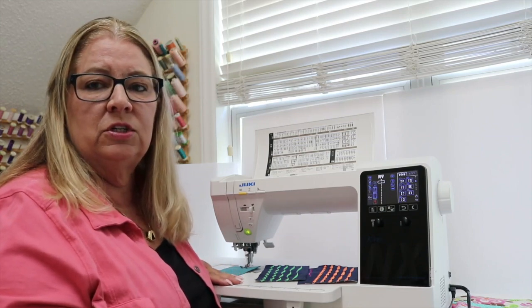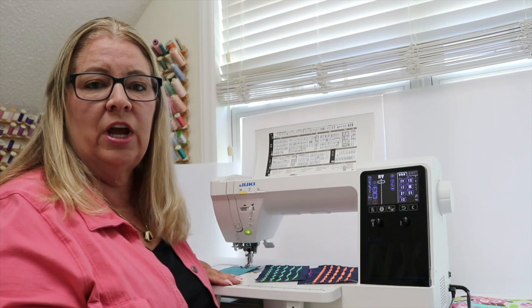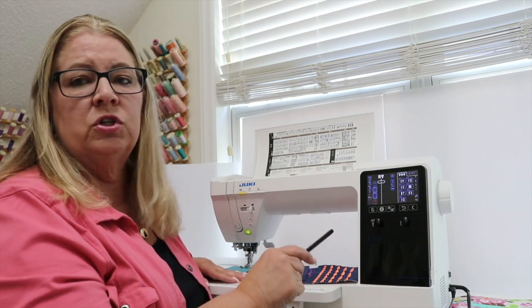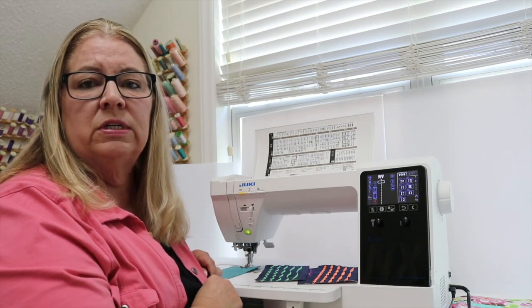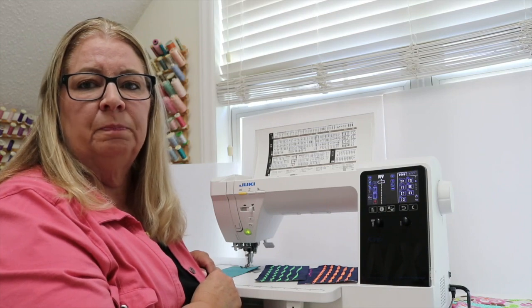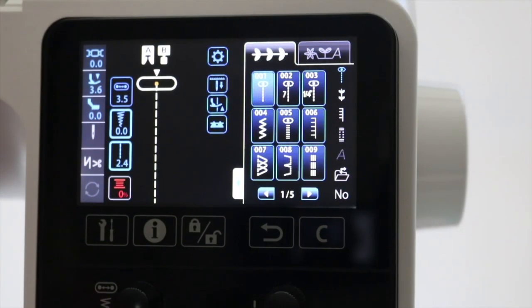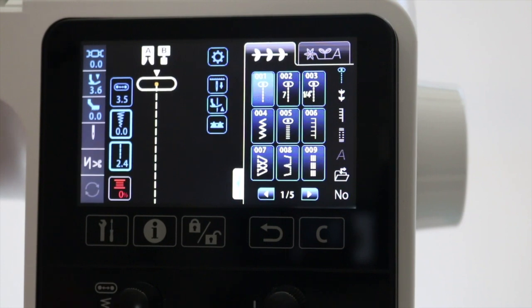We're going to be using the stitches in our satin stitch category. I'm going to zoom into the screen so you can see those stitches better. I want to choose one of the satin stitches that will work with the elongation feature. You can find this information in your instruction manual.